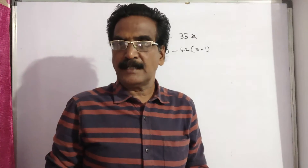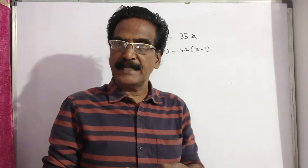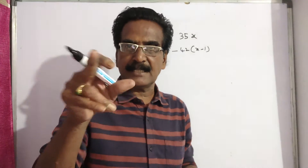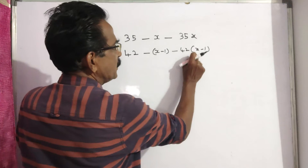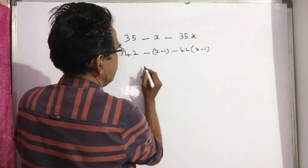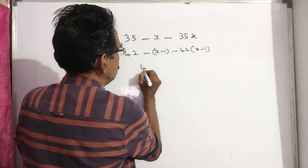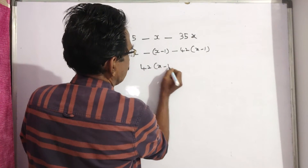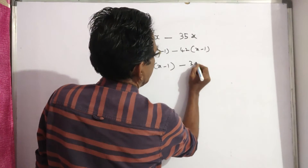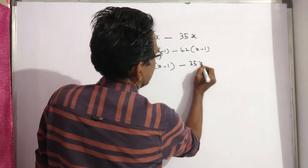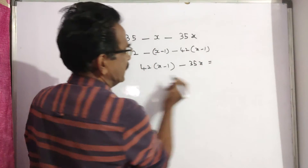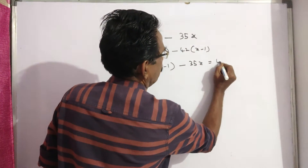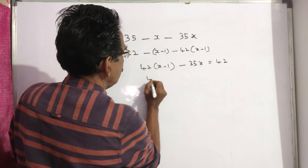The expenditure on food increases — total expenditure increases by Rs. 42. So, the present total minus the earlier total equals 42: that is, 42 into (X minus 1) minus 35X equals 42.